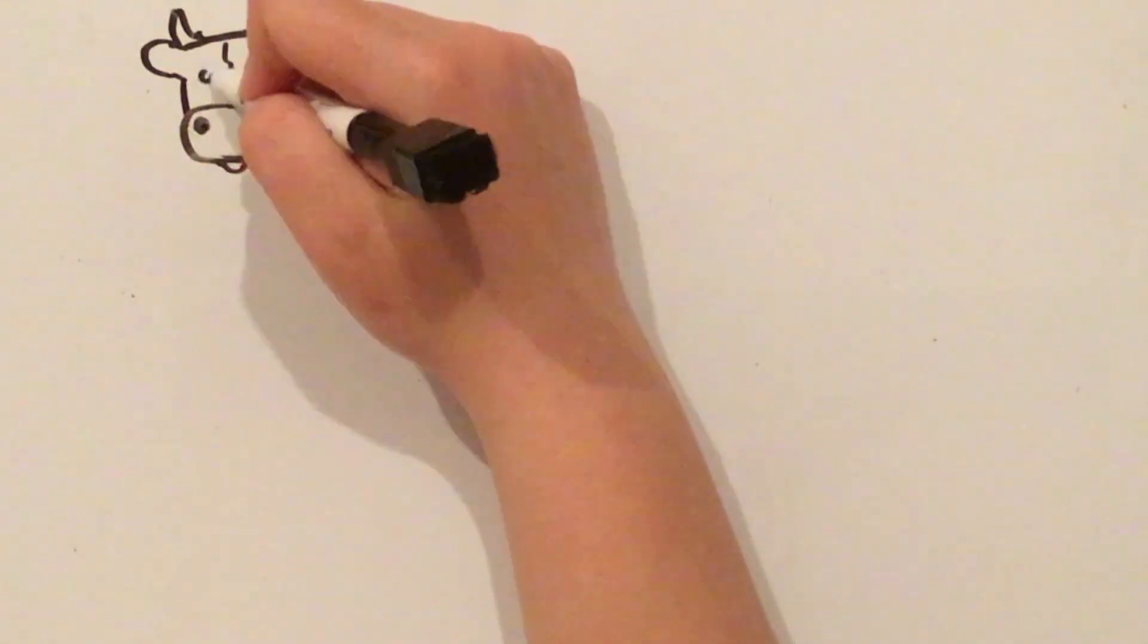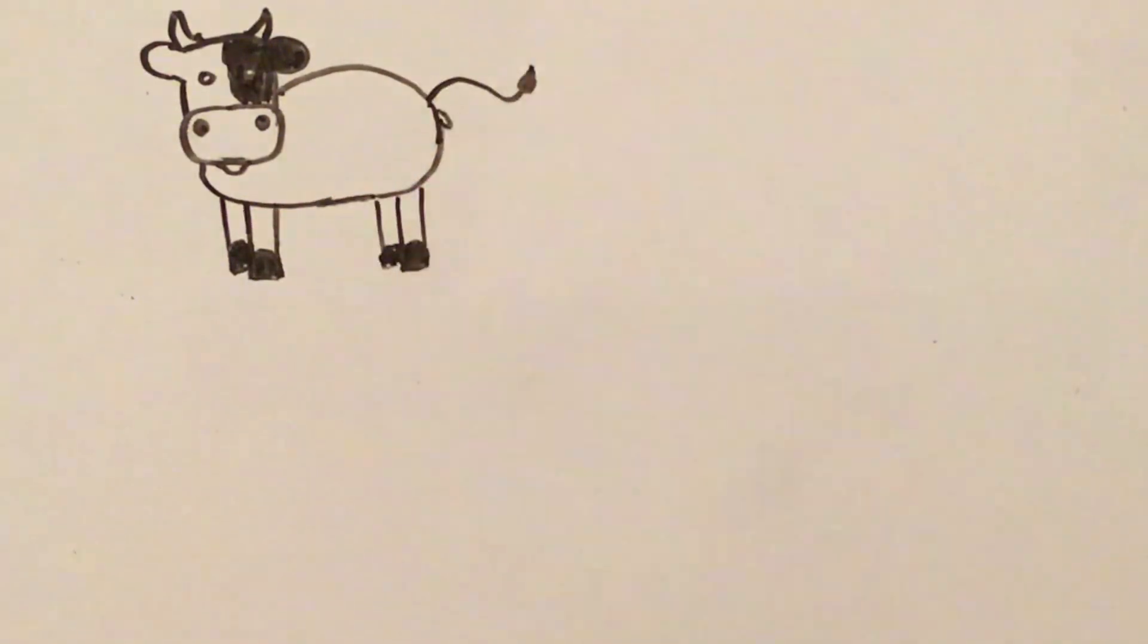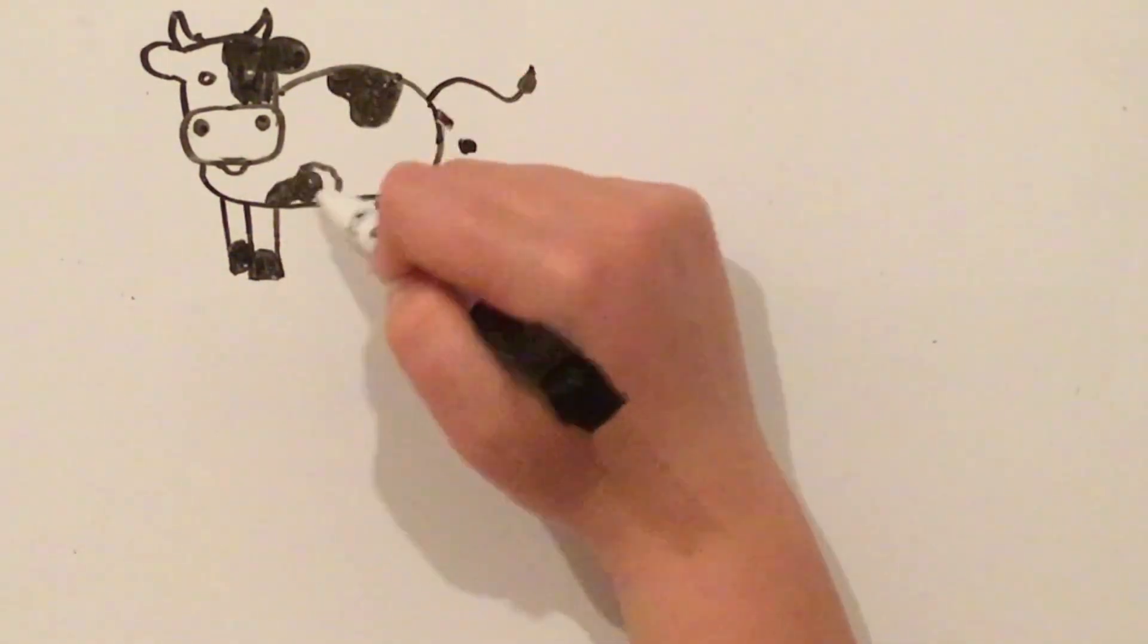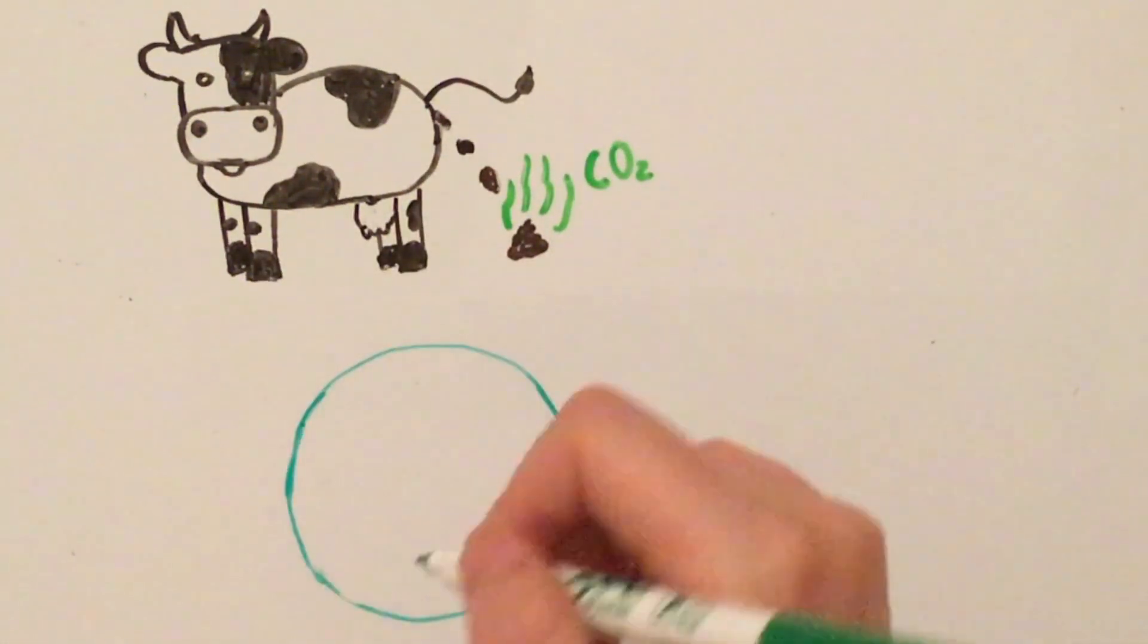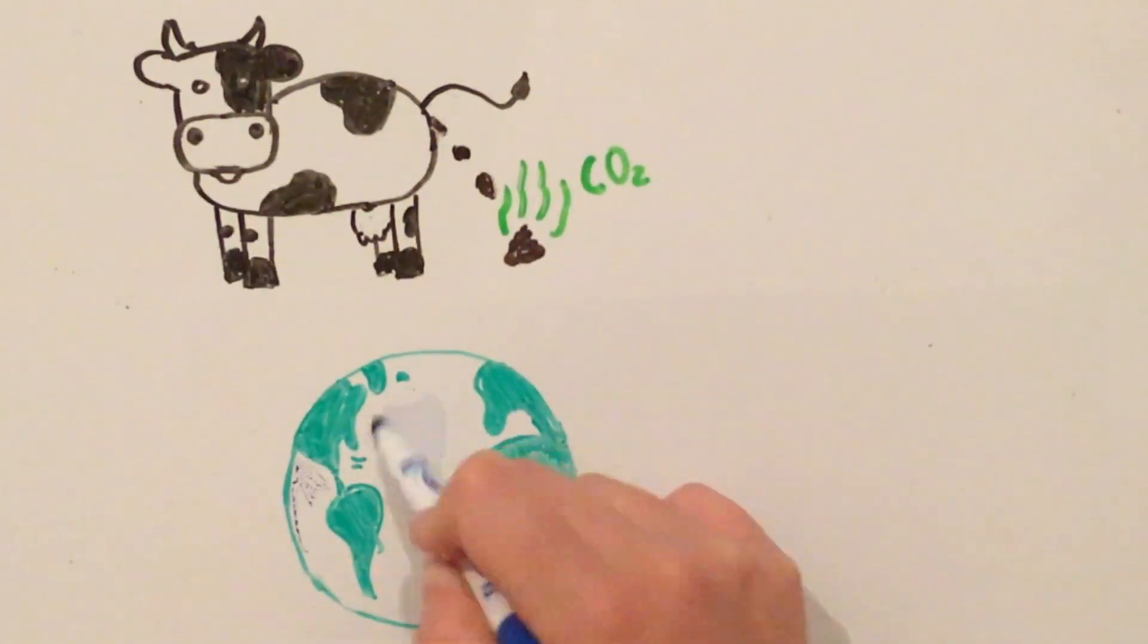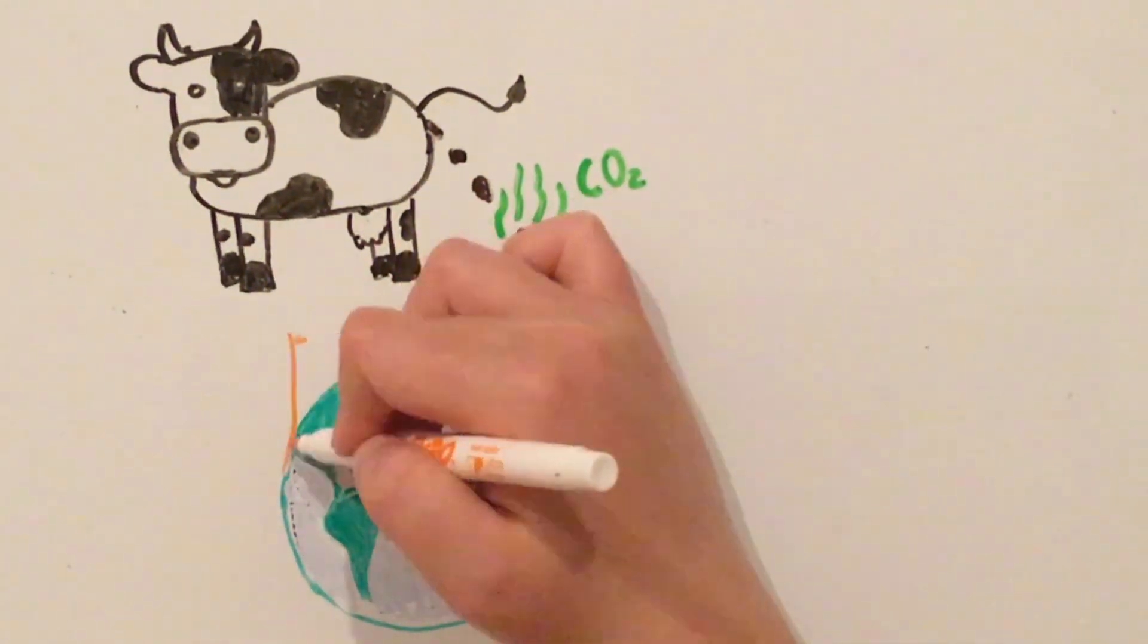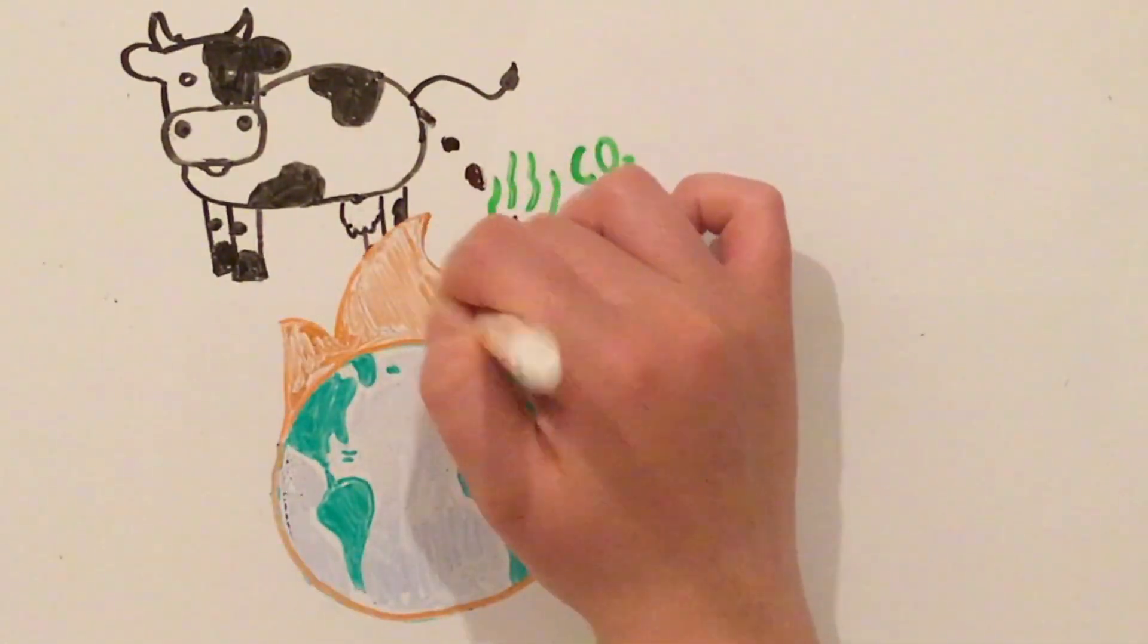Since so many people drink milk and eat so much meat, there is a need for many cows. This huge amount of cows creates a lot of manure, which releases carbon dioxide into the atmosphere. Carbon dioxide is a greenhouse gas, and this cow manure releases the biggest amount, even more than car pollution, which accelerates global warming.